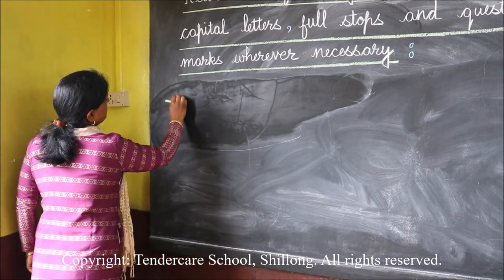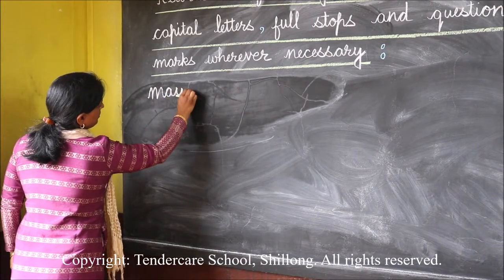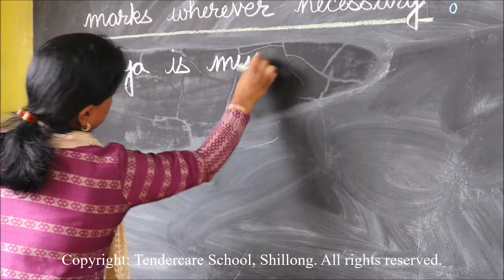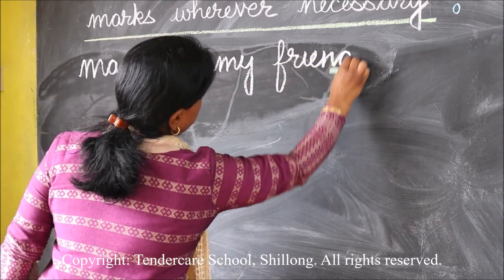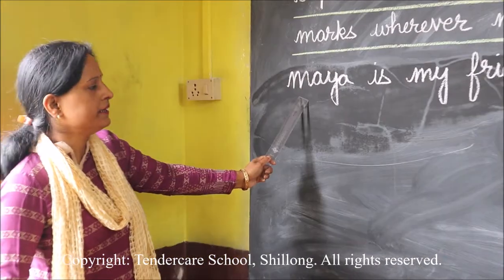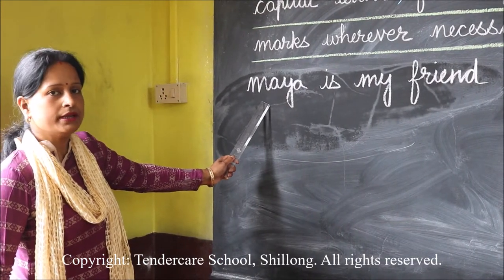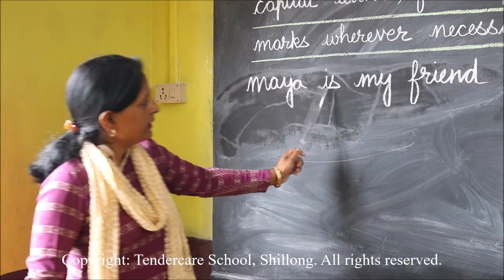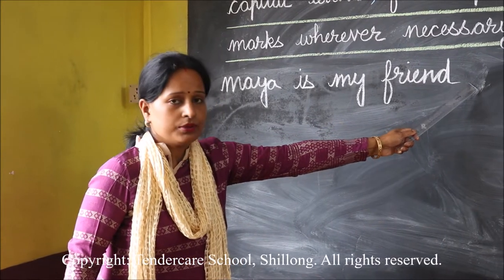Let us see how we do that. The first group of words is: maya is my friend. Now here, Maya is the name of a girl but it is not written with a capital letter — it is written with a small letter. And as we know, the name of a person we have to write with a capital letter. Also, it is a sentence but there is no full stop at the end.